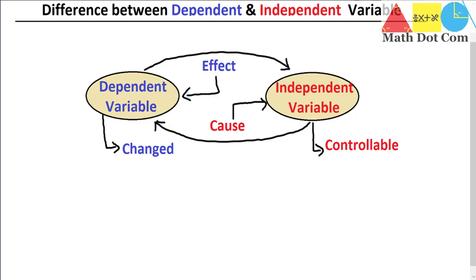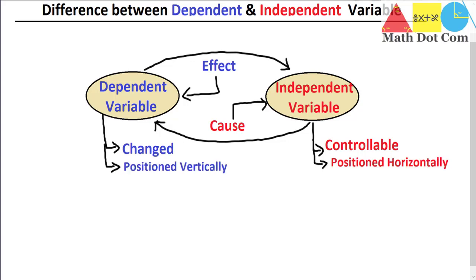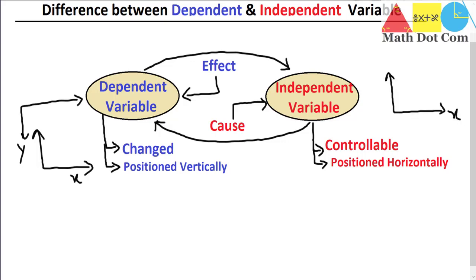Another important thing regarding dependent variable is graphical representation. When we draw a graph with an x-axis and a y-axis, the dependent variable will be positioned vertically on the y-axis, while the independent variable will be positioned horizontally on the x-axis.